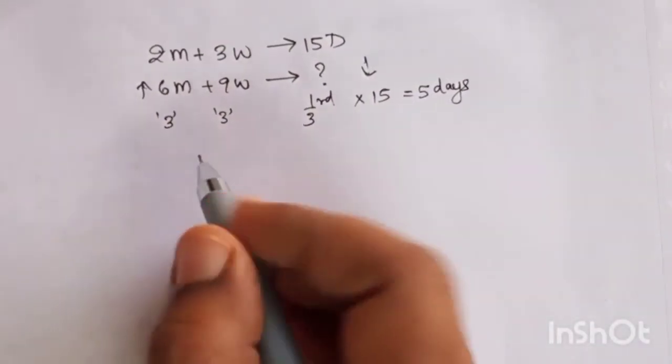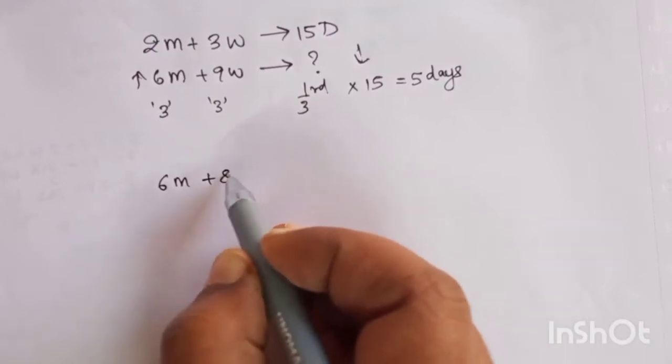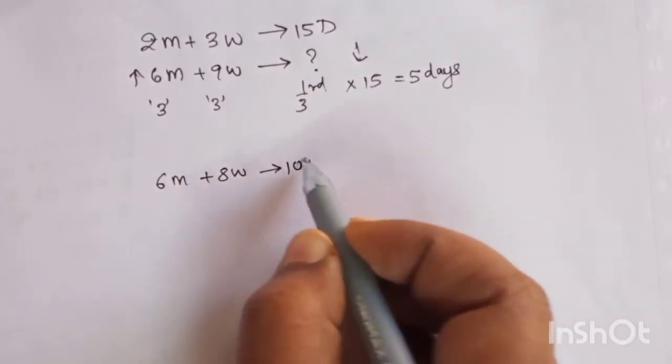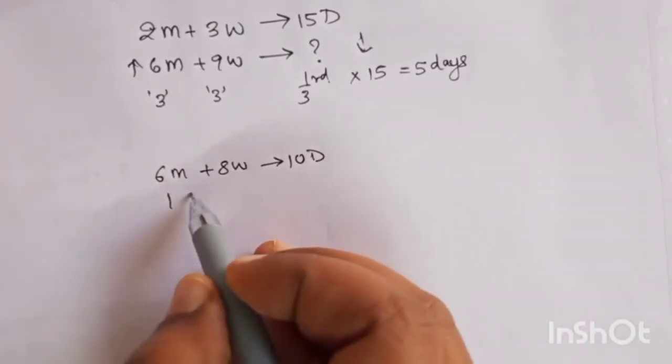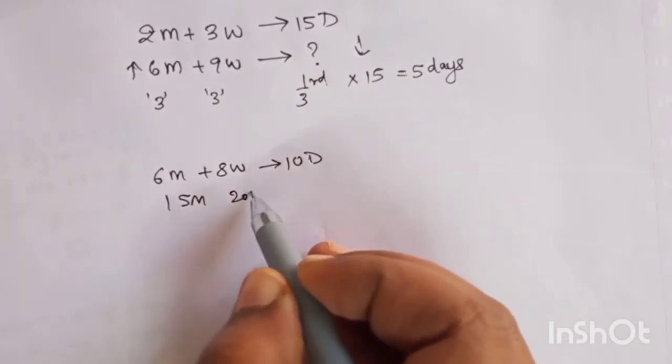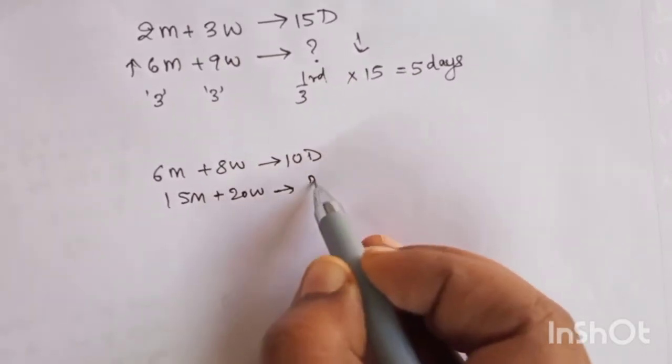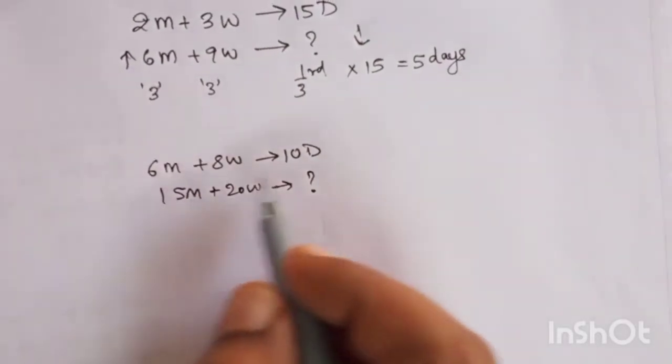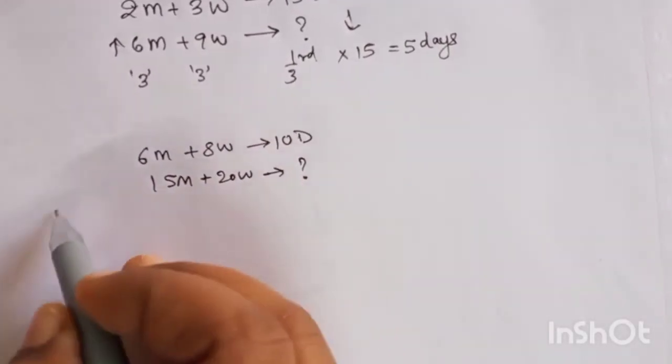Now let's see one more. Six men plus eight women are doing the work in 10 days, so 15 men and 20 women will do it in how many days. So now we need to see what is the ratio of increase.